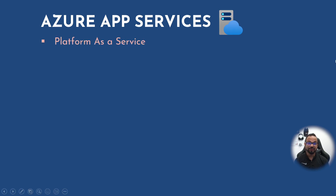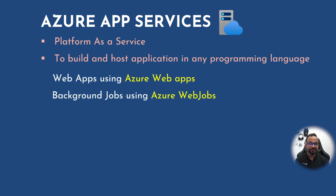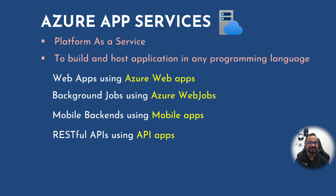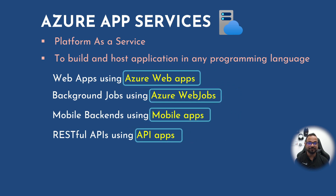Azure App Service is a Platform as a Service. It is mainly used to build and host your applications in any supported programming language. You can build four types of Azure App Services: web apps using Azure Web Apps, background jobs using Azure Web Jobs, mobile backends using Mobile Apps, and RESTful APIs using API Apps. We will be looking into these four app services in detail.